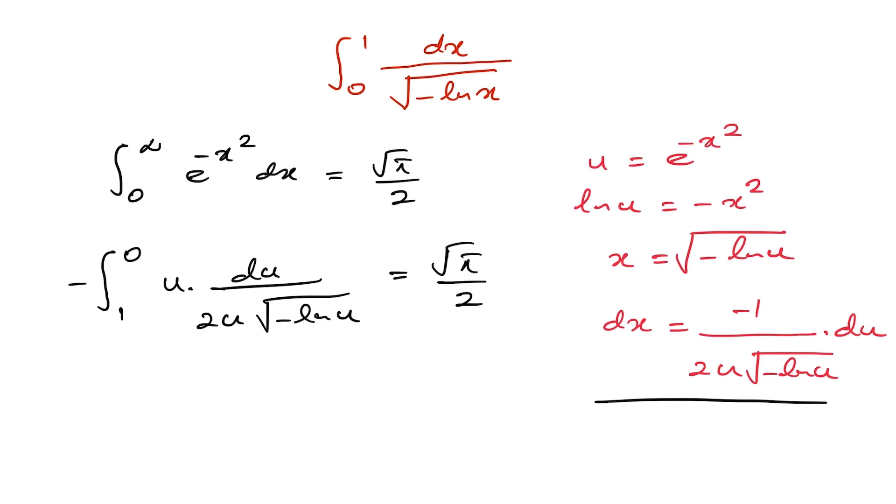Okay, then we know this 2 gets cancelled, this u also gets cancelled, and we can interchange the boundaries from 0 to 1. When we change the boundary, this minus sign gets cancelled, and we know definite integral is independent of the variable...